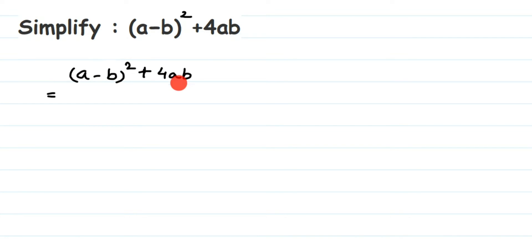If you observe, this is an identity: (a - b)². We have a direct identity. So (a - b)² is a² - 2ab + b². I'm going to use this identity to solve this.